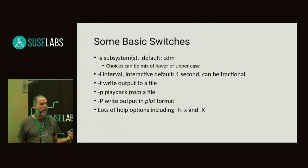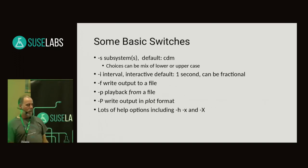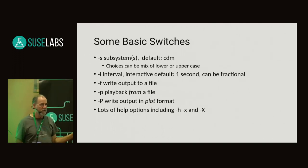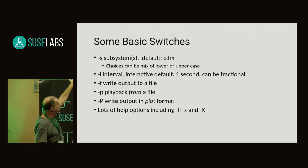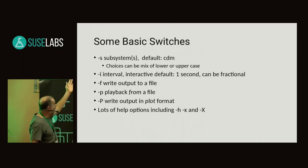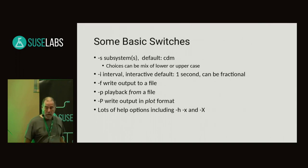There are a couple of basic switches with Collectal. When I first wrote Collectal and you said collectal -h, it listed like 50 switches, and nobody wanted to use it — way too complicated. So I came up with the notion of having about half a dozen switches for collectal -h, and then another option collectal -x which shows extended switches with all the additional options. The basic switches: -s tells you what kind of data you want — disk, network, memory, that sort of thing. -i is the interval. -f writes to a file. -p plays back from a file. Uppercase -P looks at the data in plot format. It's really that simple.